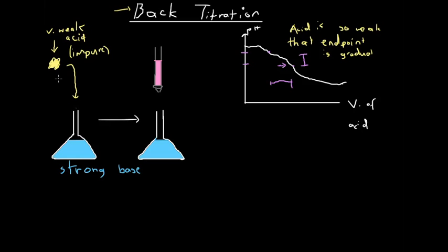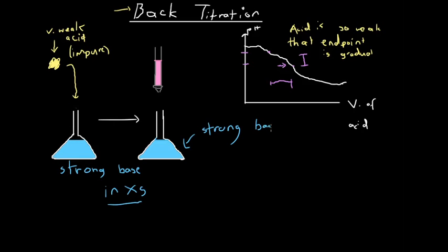We have a rough idea of the general amount of acid that could be in the sample, and so in this conical flask we ensure that we have enough strong base that it will be in excess of the very weak acid. When we add the very weak acid to the conical flask containing the strong base, we shake it up and react away all of the very weak acid. There's some strong base left over because it's in excess.